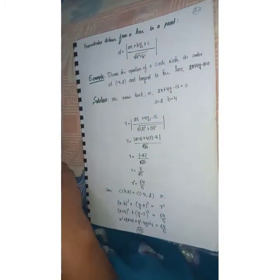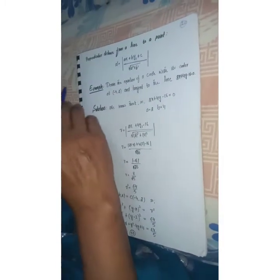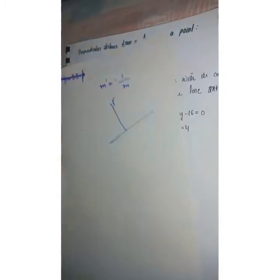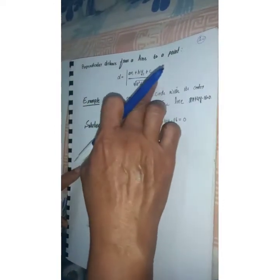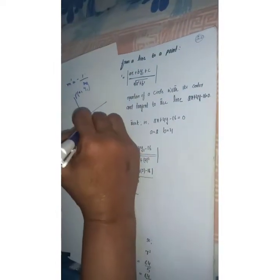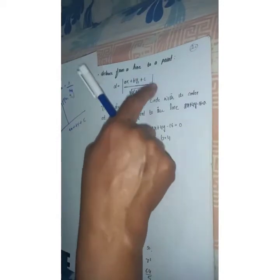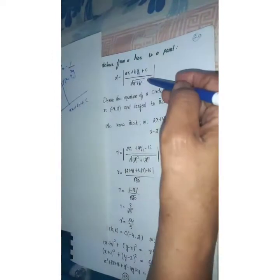Dear students, now we solve problems related to equation of normal and equation of tangents to a circle. First, recall the formula for perpendicular distance from a point to a line. If we have a straight line ax + by + c = 0 and any point P with coordinates (x1, y1), the perpendicular distance from this point to the line is given as |ax1 + by1 + c| dividing by √(a² + b²). Distance must be a positive value, so we take the modulus.